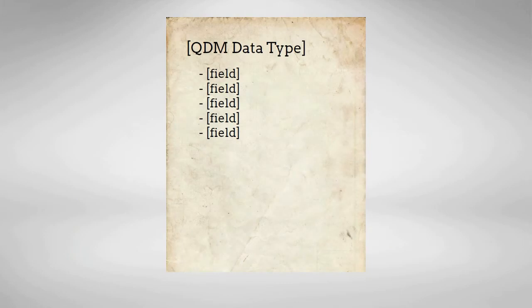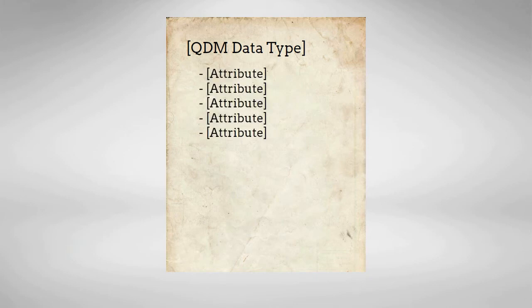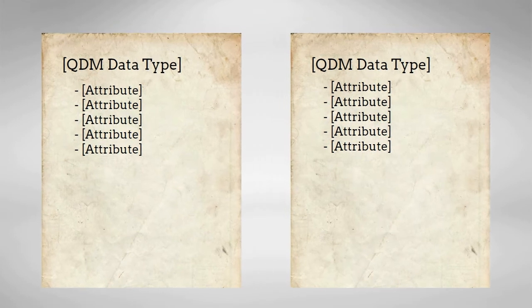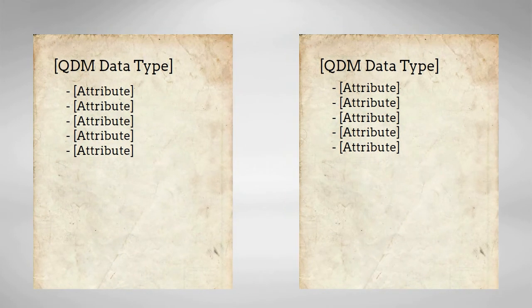QDM expresses clinical concepts as QDM data types. These QDM data types can be thought of as templates. Each template contains a set of fields called attributes. The set of attributes available to each data type reflects the kind of information relevant to that clinical concept.